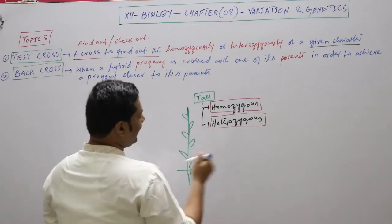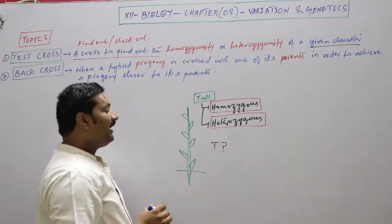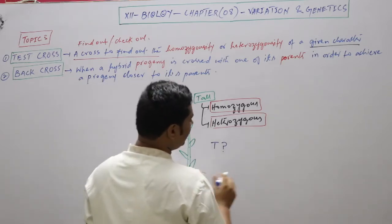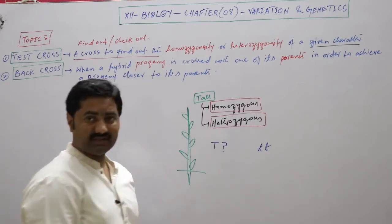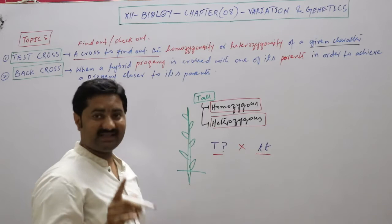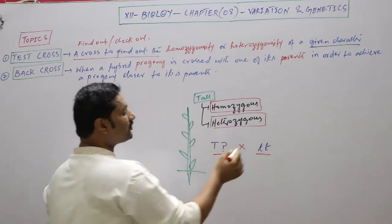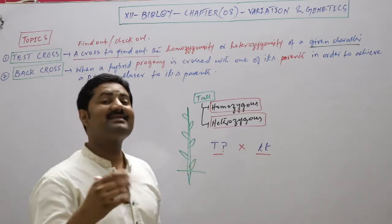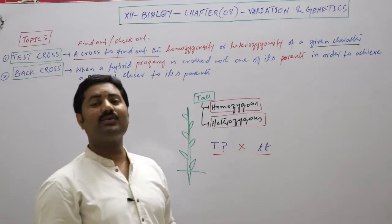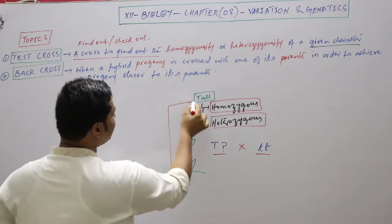Let me show you. If this plant is tall, we cross it with a recessive plant. The meaning is that only one plant — the tall plant — has been crossed with a recessive plant. If the given character's value is unknown, we cross it with the recessive. After the cross, we check whether it is homozygous or heterozygous based on the offspring ratio.